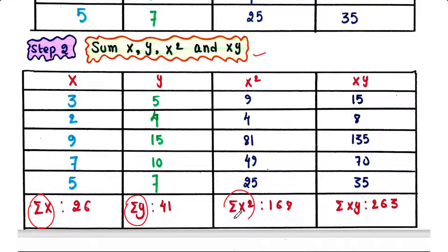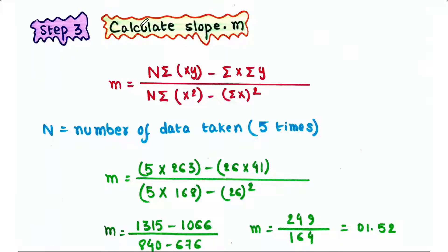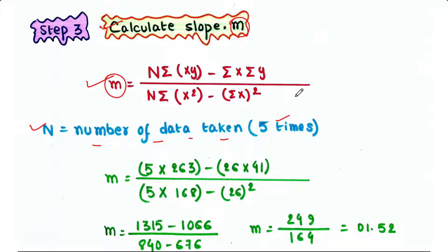Step 3 is to calculate the slope, that is m. This is the formula to calculate m. In this formula, n is the number of data points taken, which is 5 here. If we put the values in, we will get m is equal to 1.52.